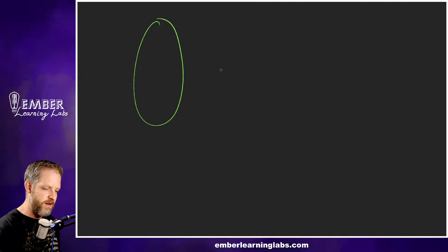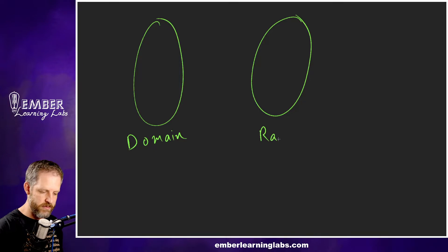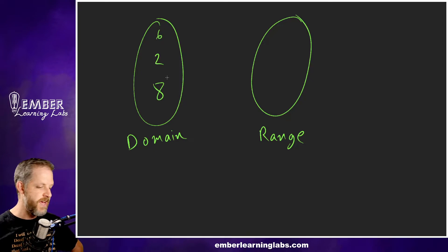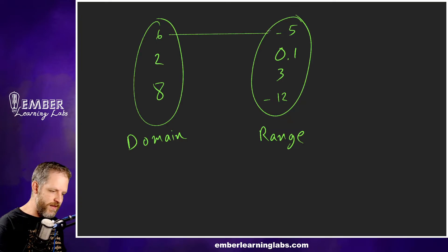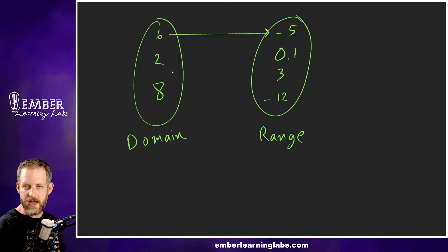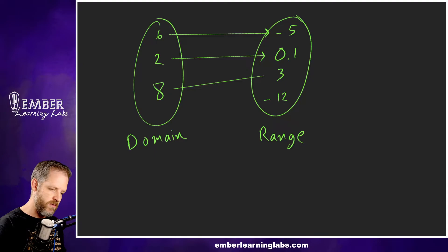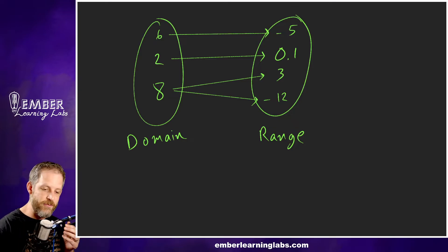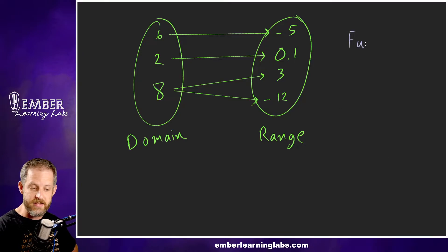I said 'pointing' because that's another way to illustrate a function. We might see a mapping of functions, something like a bubble diagram like this, where we have the domain over here and the range over here. For the domain we might have 6, 2, 8, and then for the range we might have -5, 0.1, 3, and -12. When you see a bubble diagram or mapping diagram, we have the members of the domain mapped onto different members of the range. If we ask the question 'is this a function, yes or no?'